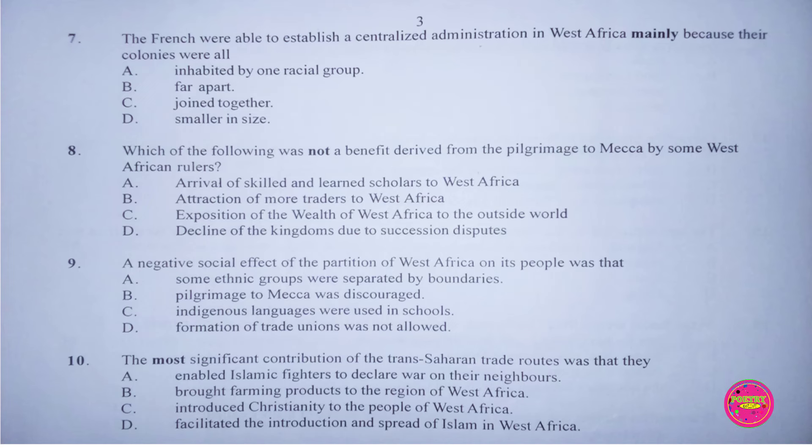Question 10. The most significant contribution of the Trans-Saharan trade route was that: A. It enabled Islamic fighters to declare war on their neighbors, B. It brought farming products to the region of West Africa, C. It introduced Christianity to the people of West Africa, D. It facilitated the introduction and spread of Islam in West Africa. The correct answer is D. Facilitated the introduction and spread of Islam in West Africa.